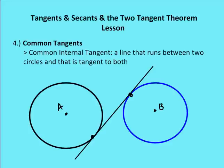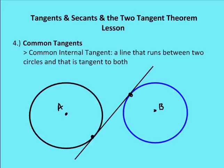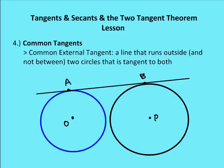Let's talk about common tangents before we try to solve for their length. Remember, there are two types. One is a common internal tangent — a line that runs between two circles and is tangent to both circles. The second type is the common external tangent, which is a line that runs outside, not between the two circles, and is tangent to both. We'll talk about how to solve problems for each type.